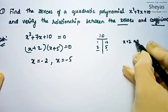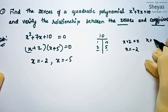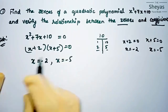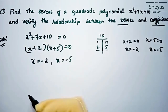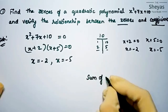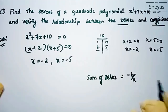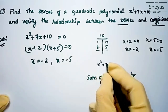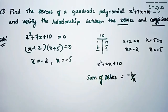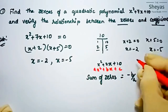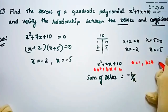Setting x plus 2 equal to zero gives x equals minus 2, and setting x plus 5 equal to zero gives x equals minus 5. These are the zeros obtained. Now, comparing with the general form ax squared plus bx plus c, for the polynomial x squared plus 7x plus 10, we have a equals 1, b equals 7, and c equals 10.